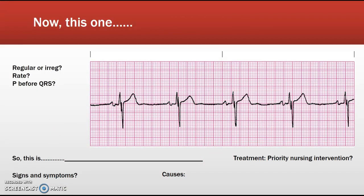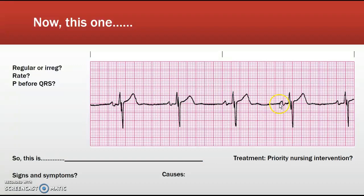Now let's look at this one. Is it regular? Yes — the distances between complexes are the same. The rate? Using the six-second method it's about 50; using the 300-150 method it comes out to about 47. Is there a P wave before every QRS that looks the same? Yes — so we know this originated from the same group of cells. You have a regular rhythm originating in the sinoatrial node with a rate of 47 to 50. Heart rates less than 60 are called bradycardia — so this is sinus bradycardia.